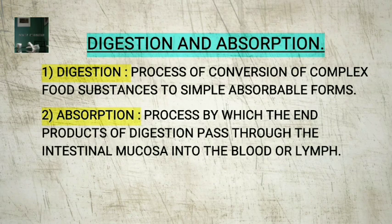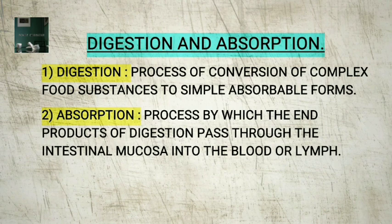Digestion is the process of conversion of complex food substances to simple absorbable forms. Biomacromolecules in food cannot be utilized by our body in their original form, so they have to be broken down and converted into simple substances in the digestive system. This process is called digestion. Absorption is the process by which the end products of digestion pass through the intestinal mucosa into the blood or lymph.